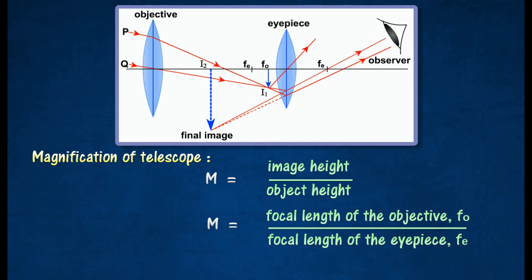The distance between the objective lens and the eyepiece is equal to FO plus FE.